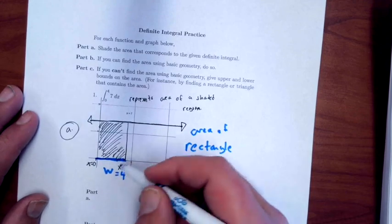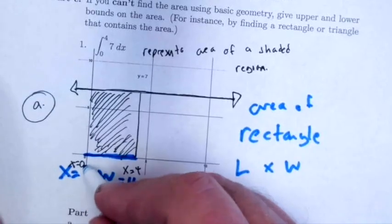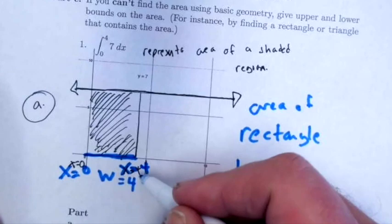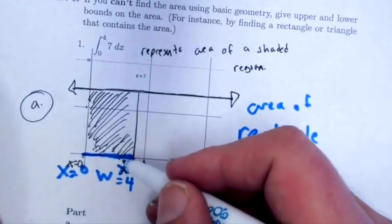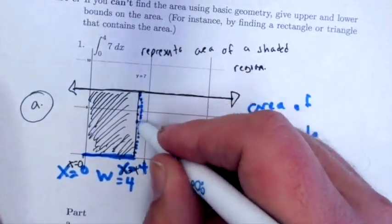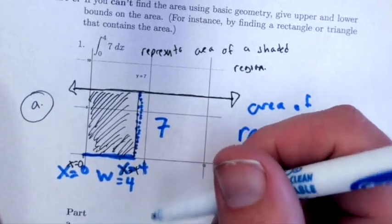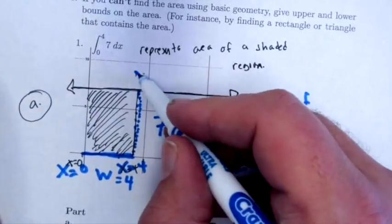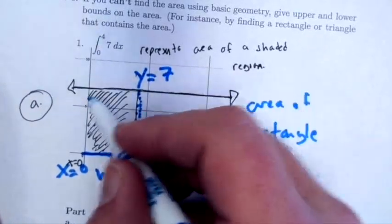The reason for that is this goes from x equals zero to x equals four, so that's a width of four. Then this height would be seven because this is a curve that has a height of y equals seven the whole way.